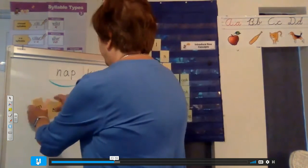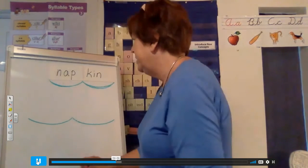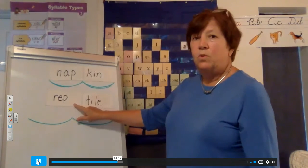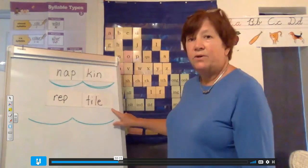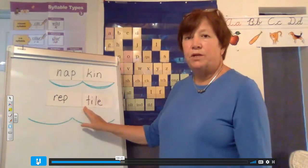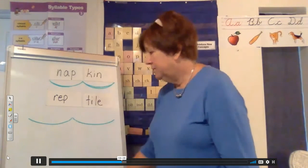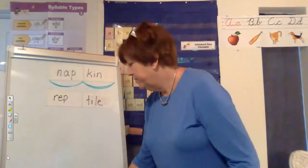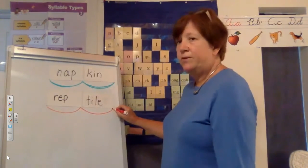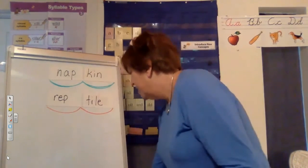Let's try another word. We have the vowel E and I — how many consonants in between? Two consonants in between, so we need to split between those two consonants. First syllable: rep. Second syllable: tile. Whole word: reptile. You're probably familiar with that word — reptile.